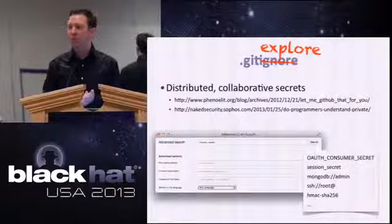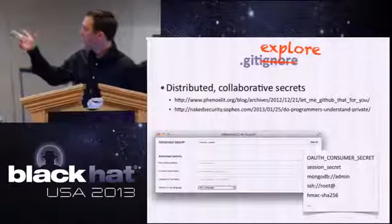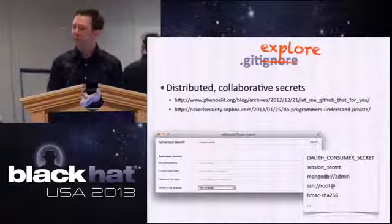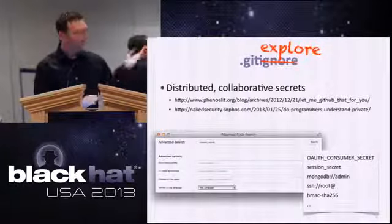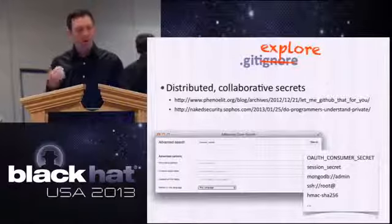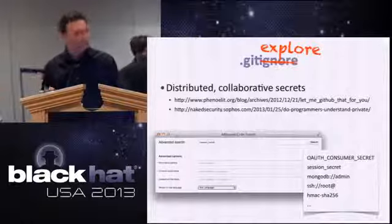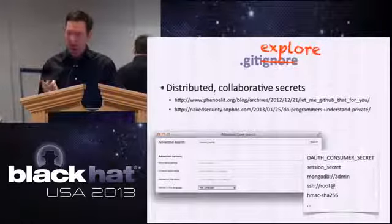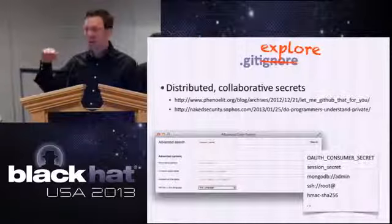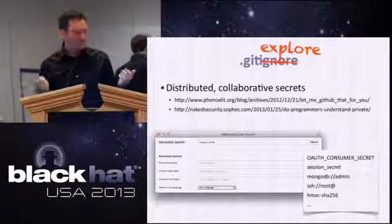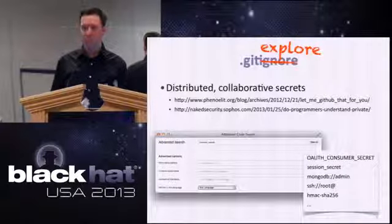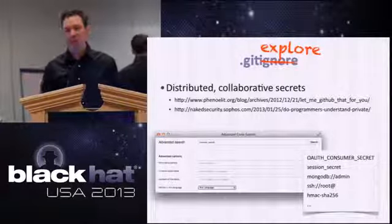There's the idea of secrets being stuffed into GitHub. Back in December and January there were announcements demonstrating how people were checking in their SSL or SSH private keys, as well as their Ruby on Rails HMAC secrets. You can spend an afternoon and evening searching through GitHub looking for all the secrets associated with OAuth consumer secrets, session secrets, MongoDB admin URLs, SSH connection URLs with passwords, and secrets for HMAC-SHA-256, SHA-512, and so on. We need to make sure we're not setting up developers to accidentally check secrets into things like Git.